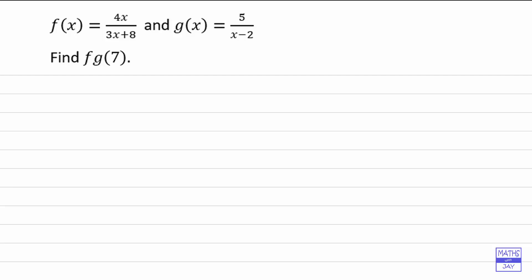So that means we want to find g of 7 first of all and then find f of whatever that turns out to be. So we're working from the inside out.